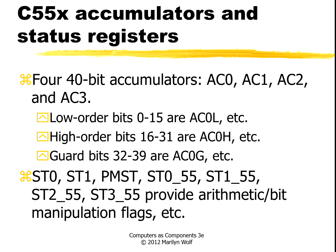There are actually four accumulators, each 40 bits wide: AC0 through AC3. The different fields in each of these accumulators have names. For example, the bottom 16 bits of AC0 are known as AC0L, the next 16 bits are known as AC0H, and the top bits, which are known as the guard bits, are AC0G.